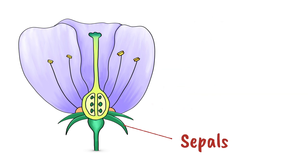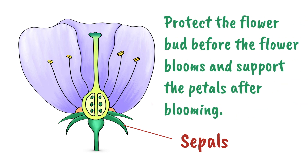Lastly, the sepals. These are there to protect the flower bud before the flower blooms, and they help support the petals after the flower has bloomed.